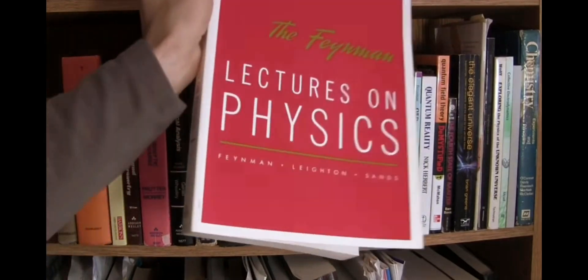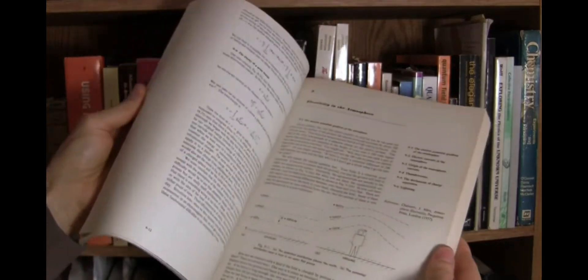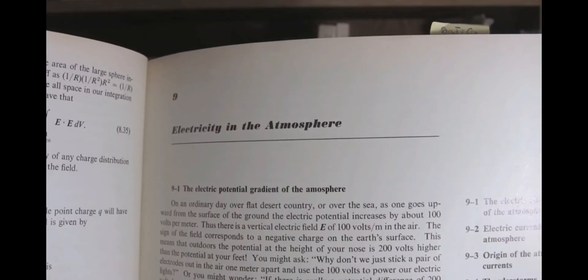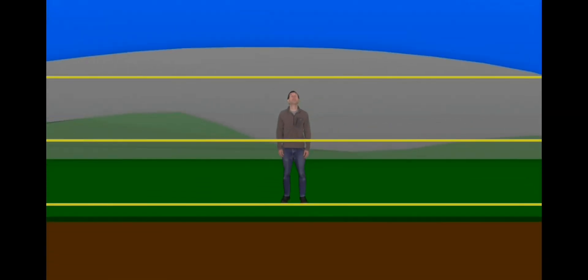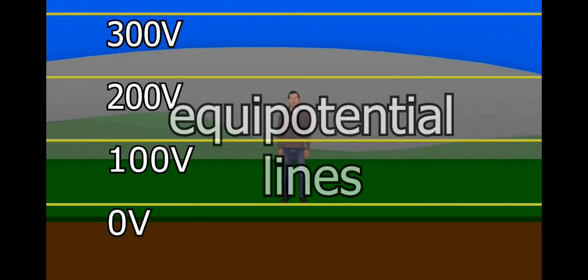Much of the following explanation is adapted from Nobel Prize winning physicist Richard Feynman's Lectures on Physics, the section called Electricity in the Atmosphere. For every meter you go up in the air, the voltage increases by around 100 volts, or around 100 volts per yard. We can draw these voltage increases using what are called equipotential lines.